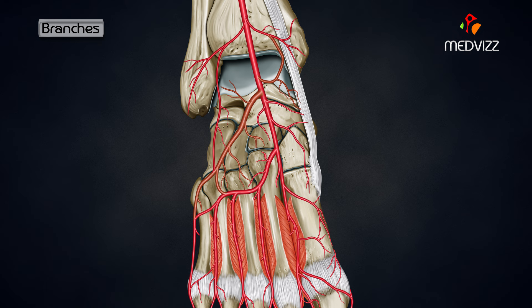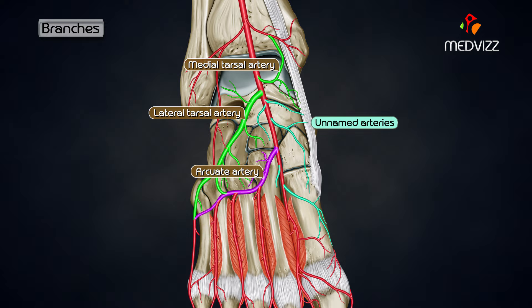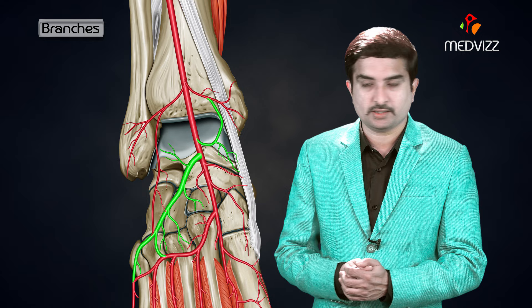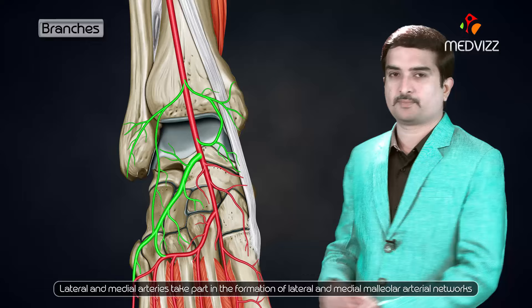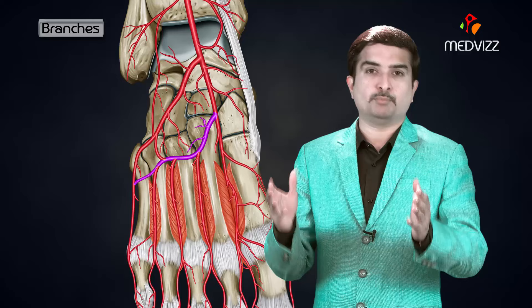The dorsalis pedis artery gives important branches including the lateral and medial tarsal arteries, and the arcuate artery. The lateral and medial tarsal arteries take part in the formation of the lateral and medial malleolar arterial networks.